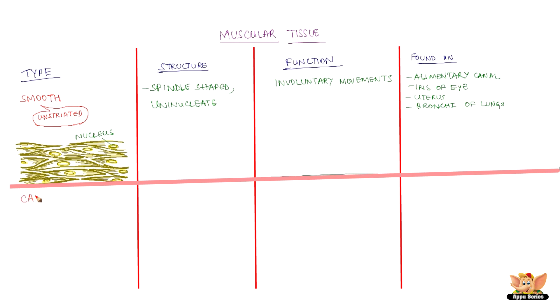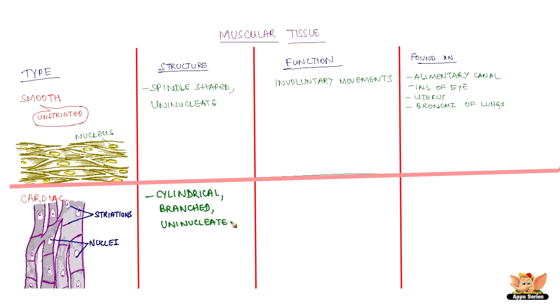The muscles of the heart are also involuntary because we do not have conscious control over them. They have cells which are a bit different from smooth muscles. The cells of cardiac muscles are cylindrical, branched, and uninucleate. Cardiac muscles assist in rhythmic movements and are found in muscles of the heart.